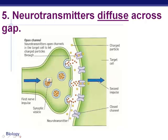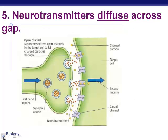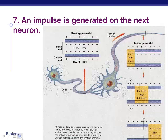The neurotransmitters slowly work their way over, and when they get to the other side, they bind with receptors on the post-synaptic membrane. That stimulates an impulse to start on the other side — it causes the sodium gate to open on the new dendrite and starts that cascading effect of the impulse traveling down again.